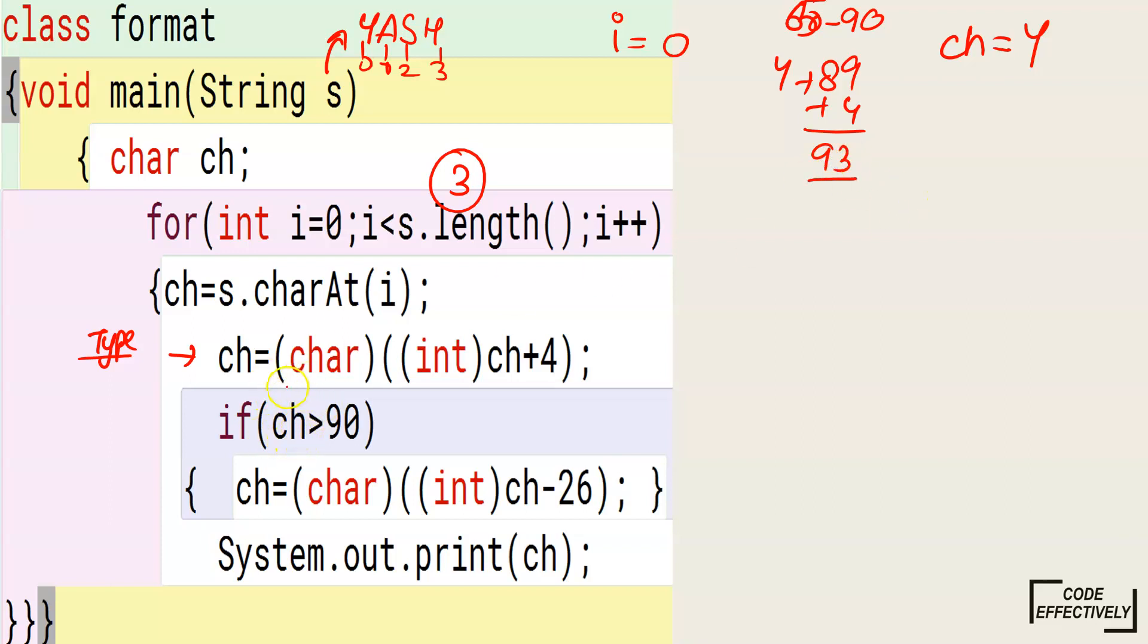ch, it will again take back to char 93. Let's see what happens here. It will be char 93. Let's see, there is no 93. It will check if ch is greater than 90. Yes, it is greater than 90. What will it do?